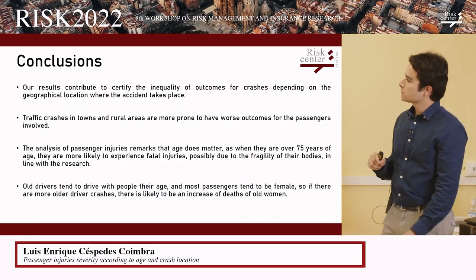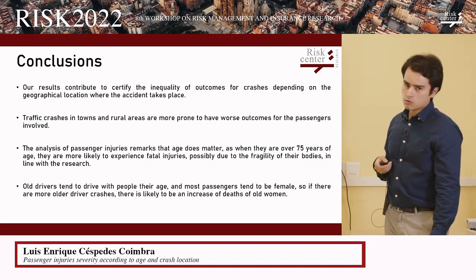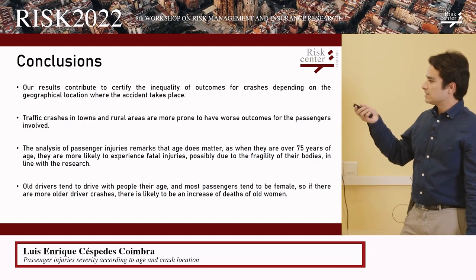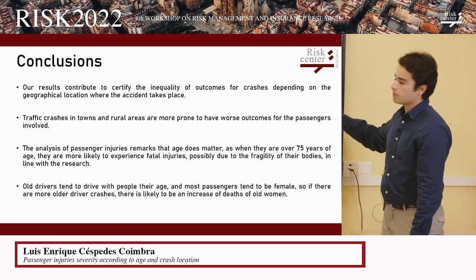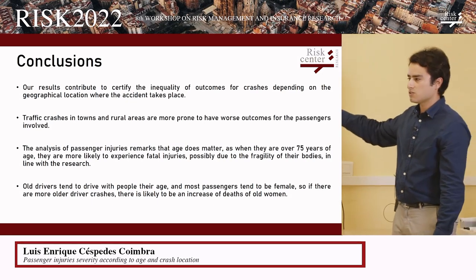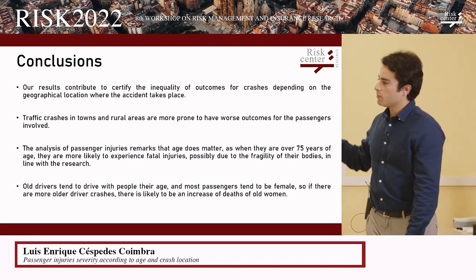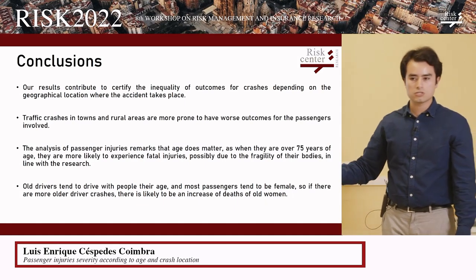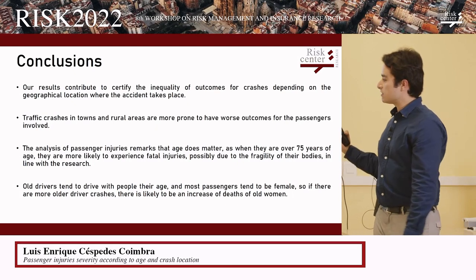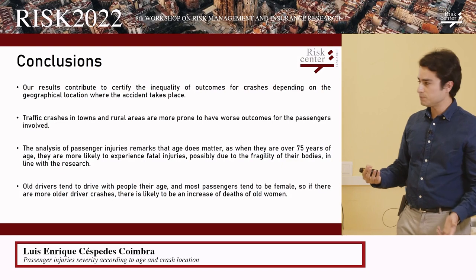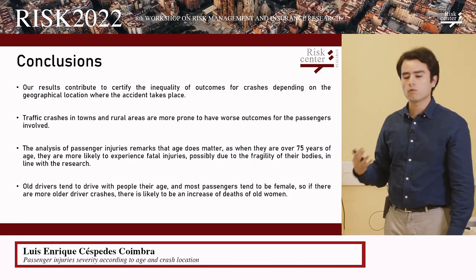These results confirm that there is inequality depending on where the accident takes place — accidents in towns and rural areas are more prone to having worse outcomes. Passenger age matters, as those older than 75 are more likely to die. Even though driver age appears not to be significant on its own, we must be aware that people tend to drive with people their own age. So if older male drivers go with older female passengers and there is an accident, this implies that the more old people we have driving, the more women passengers we will find, and we could expect a surge in the deaths of older women in traffic crashes in the future.